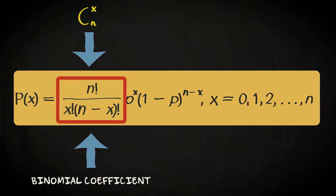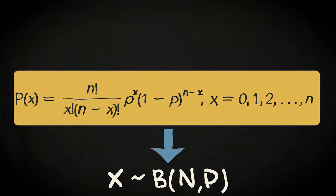The shorthand for the entire formula is this, which says x is a binomial random variable with n trials and success probability p.